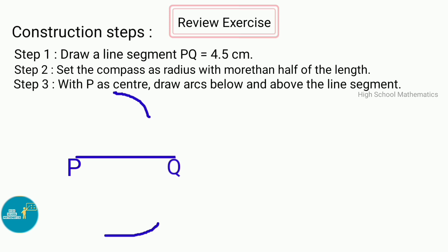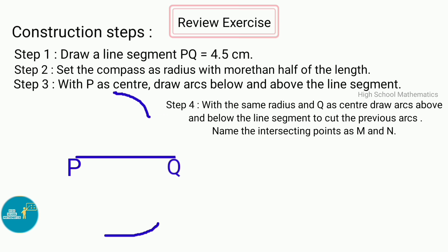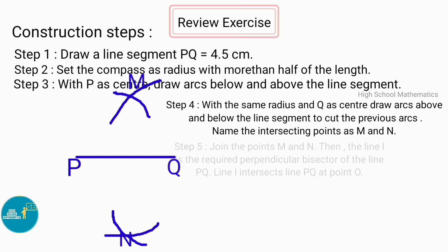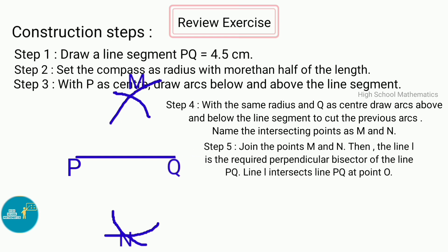Step 3 — with P as center, draw arcs above and below the line segment. Step 4 — with the same radius and Q as center, draw arcs above and below to cut the previous arcs; name the intersecting points M and N. Step 5 — join M and N. Line L is the required perpendicular bisector of PQ, intersecting PQ at point O.